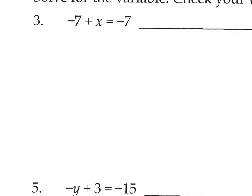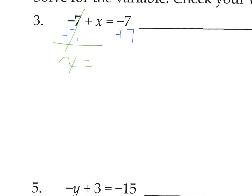We have negative 7 plus x equals negative 7. We're trying to isolate the x, so we're going to add 7 to both sides. When solving an equation, you're always focusing on the variable and undoing whatever's happening on that side. Since this is a negative 7, we undo it with positive 7. These cancel, and x equals negative 7 plus 7, which is 0.